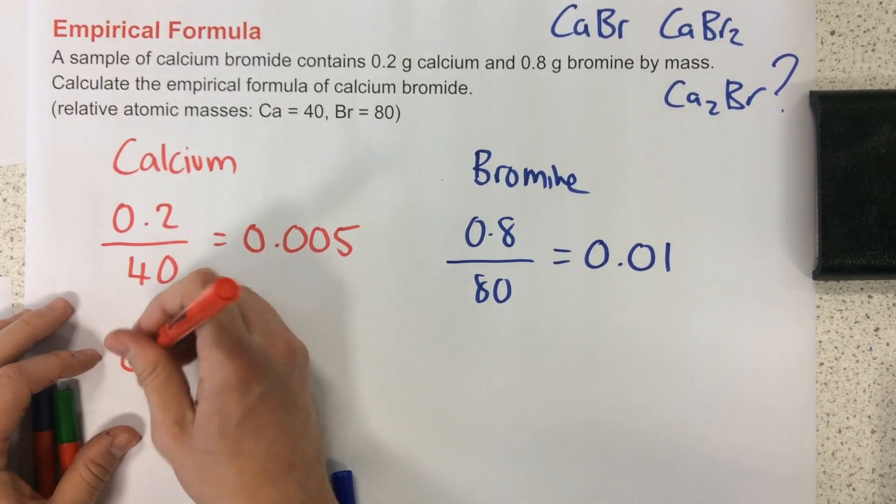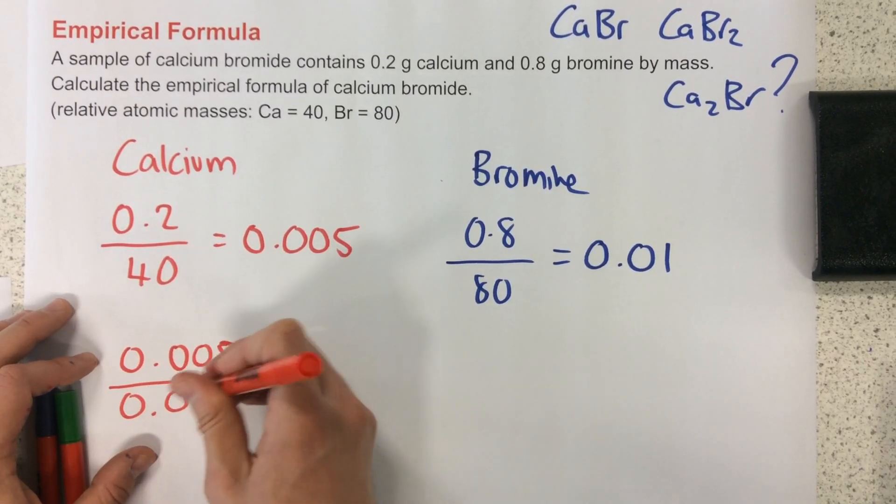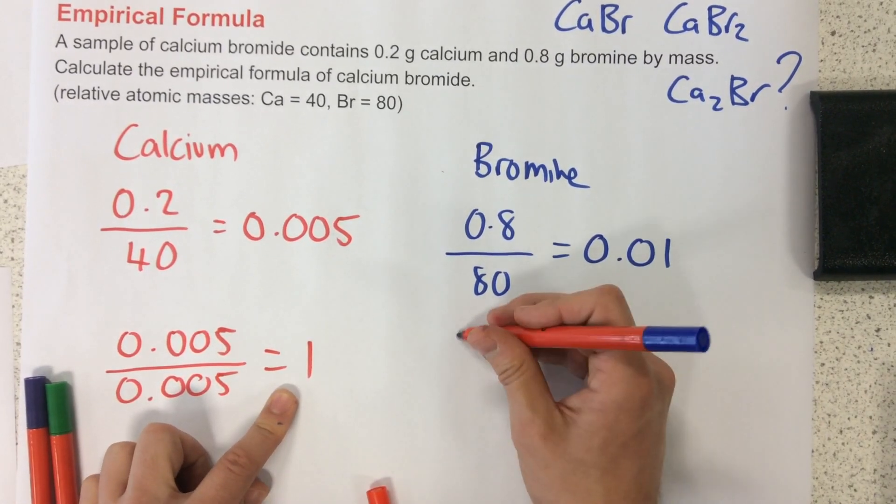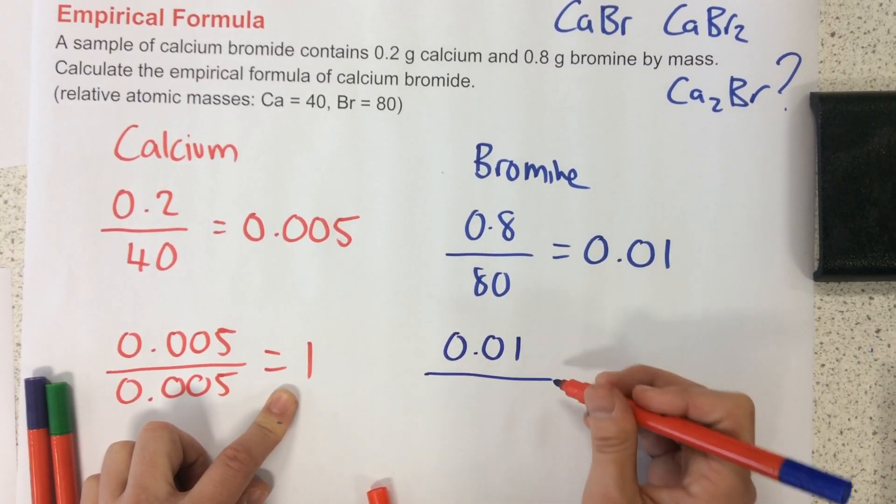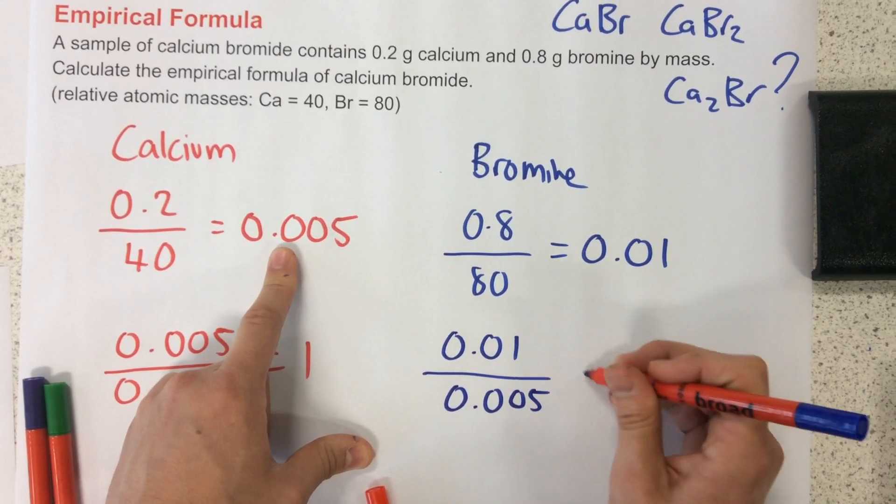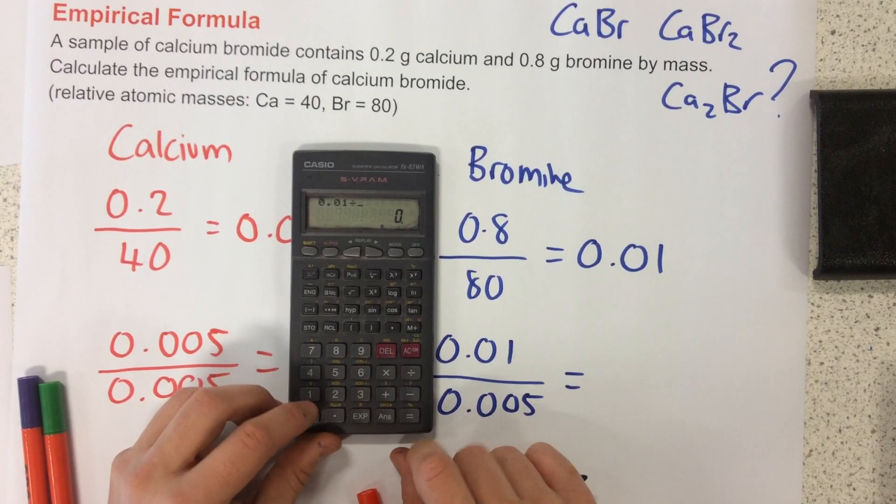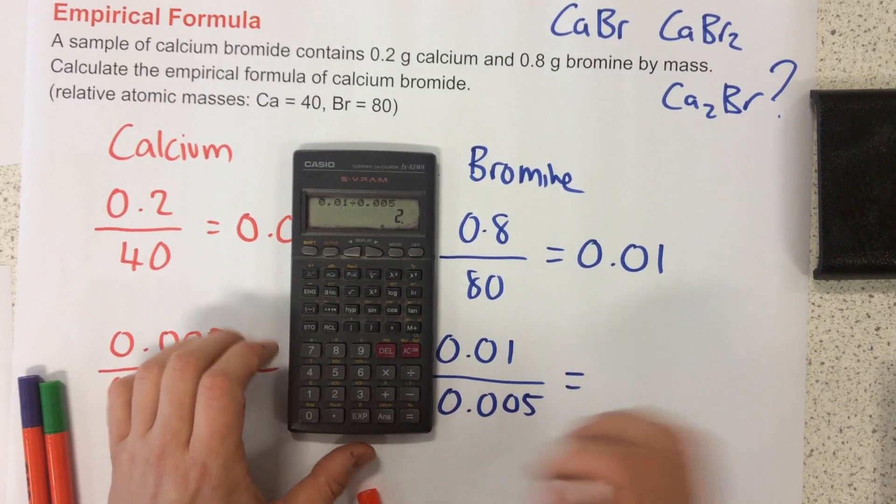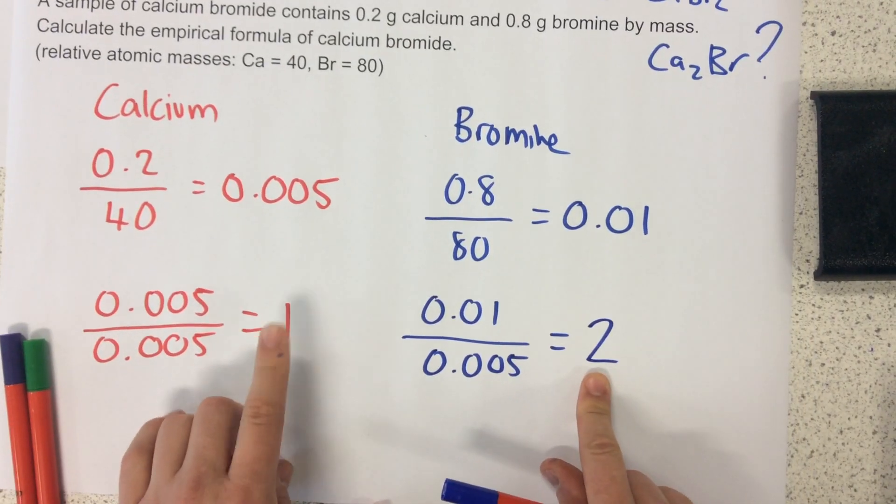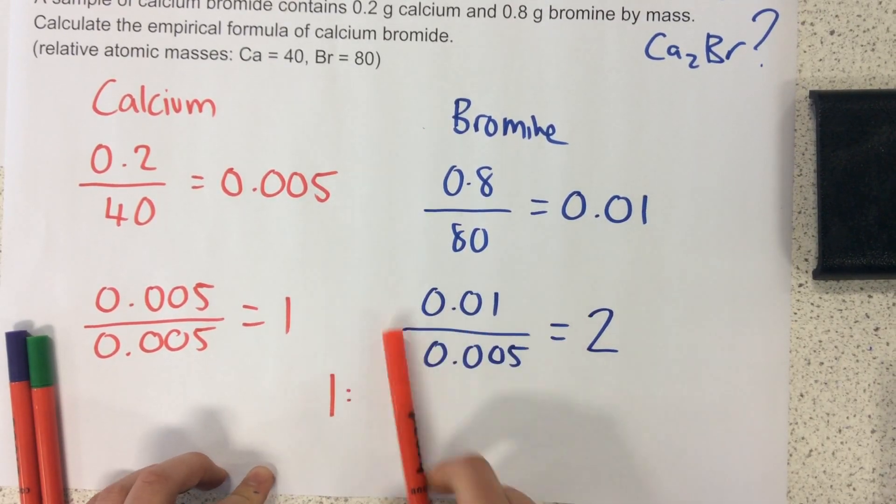So for calcium, I'm going to do 0.005 divided by 0.005, which equals 1, because I'm dividing the number by itself. This one, I'm doing 0.01 divided by the smaller number of the two, which is this one here, 0.005. Now if I use my calculator, 0.01 divided by 0.005, my answer is 2. So here, I've got my ratio, 1 calcium to 2 bromines. So 1 to 2.